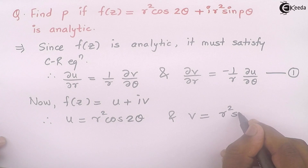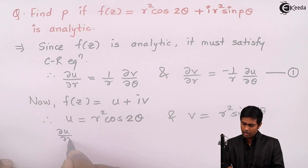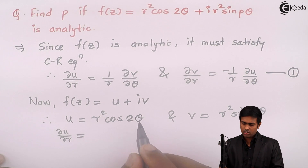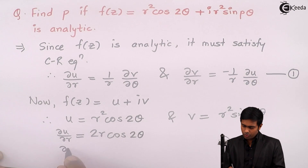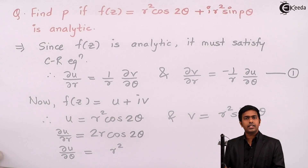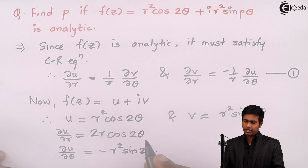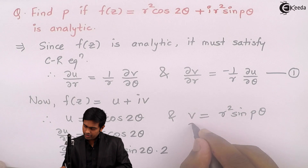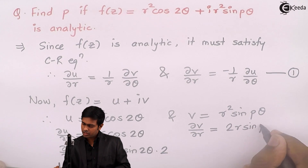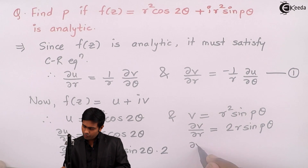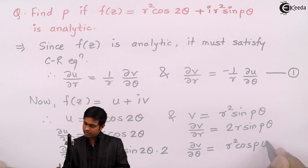Let us differentiate u with respect to r. Since we are differentiating partially, theta is constant, so cos 2 theta is constant and the derivative of r square is 2r. Similarly, ∂u/∂θ equals r square times the derivative of cos 2 theta, which is minus sin 2 theta times 2. Next, ∂v/∂r is 2r sin p theta, and ∂v/∂θ equals r square times the derivative of sin p theta, which is cos p theta times p.